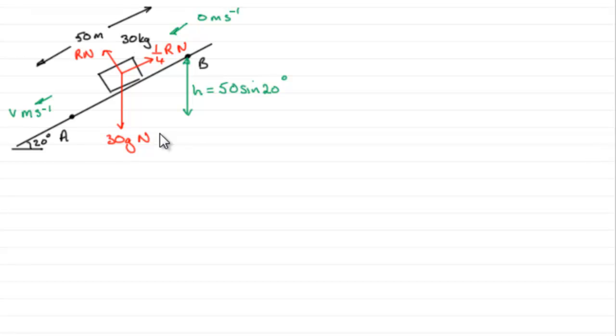So to do something like this, using the work energy principle, what I'm going to look at is the overall loss in energy, and I'm going to say that that loss in energy is going to equal the work done against the frictional force here. I'm going to create an equation where we can work out what V is. So first of all, let's have a look at the different types of energy that are gained and lost.